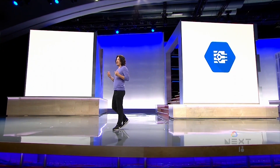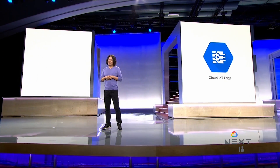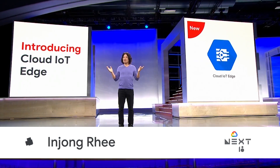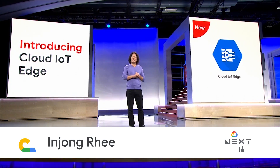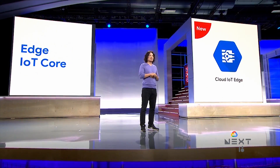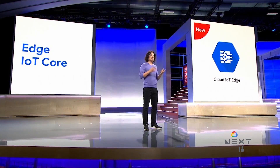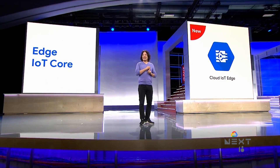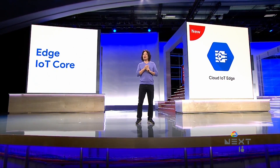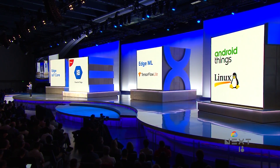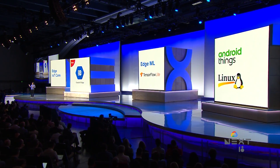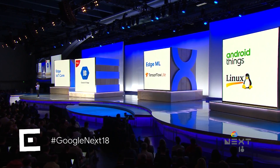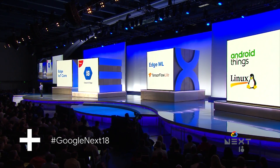Today, I'm pleased to announce Cloud IoT Edge. Cloud IoT Edge can run on Android Things or Linux, and it consists of two components. One is Edge IoT Core, which is basically a gateway function for faster provisioning, connecting into cloud, and data aggregation and filtering — a lot of data preprocessing.